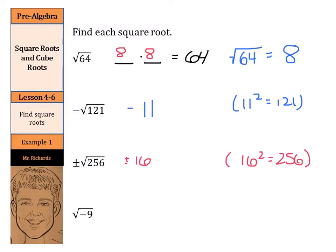The square root of negative 9 actually does not exist — there is no real solution. The reason why is that there's no number that you can multiply by itself to get to negative 9. For example, the square root of 4 is 2, and the negative of the square root of 4 would be negative 2, since the square root of 4 is 2, and the negative sign at the end.